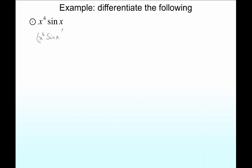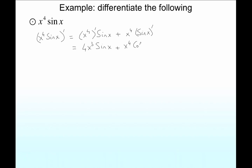As an example, let's take x to the power 4 times sine x. Our rule says we differentiate the first — the derivative of x to the 4 is 4x cubed — and write the second as it is: sine x. Then write the first as it is and differentiate the second: the derivative of sine x is cosine x, so we get x to the 4 times cosine x. There's no need to simplify further, though you could factor out x cubed.